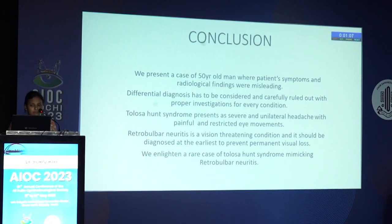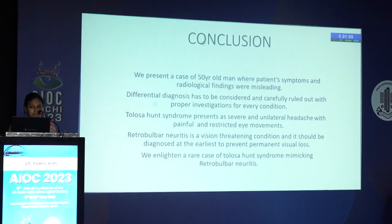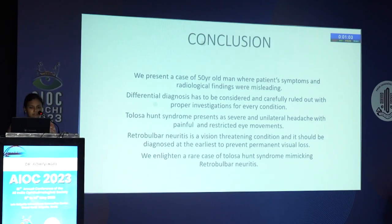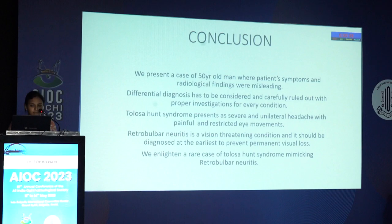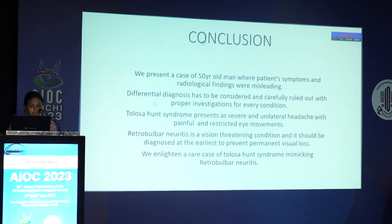We present a case of a 50-year-old man where the patient's symptoms and radiological findings were initially misleading. Differential diagnoses have to be considered and carefully ruled out with proper investigation for every condition. Tolosa-Hunt Syndrome presents as severe unilateral headache with painful and restrictive eye movements. Retrobulbar neuritis is a vision-threatening condition and should be diagnosed at the earliest to prevent permanent visual loss.